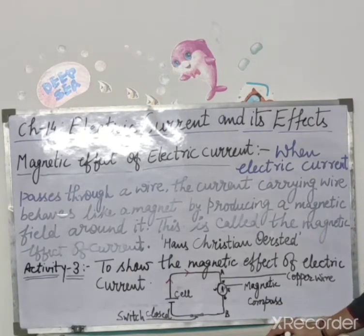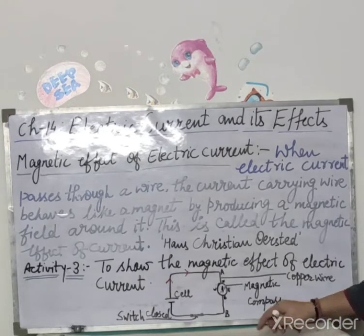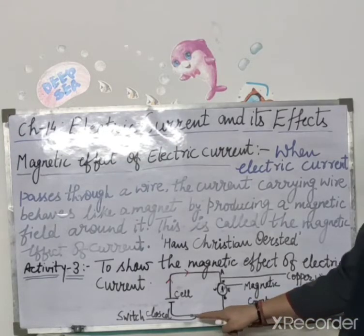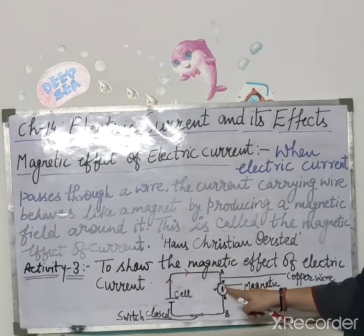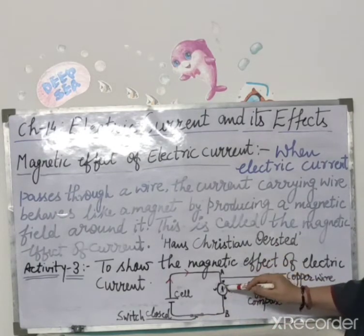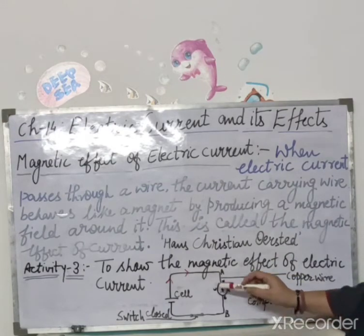When the current in the wire is stopped, you find that the magnetic compass needle comes back to its original north-south direction. Jaisei hi hum log switch ko fir se open karenge, to kya hoga — yi jo needle hai, woh waapis se apni original position mein pahunch jaigi.